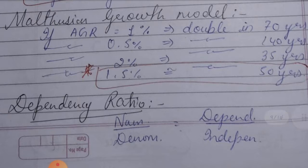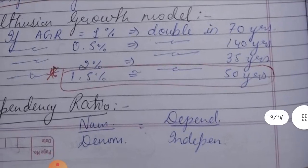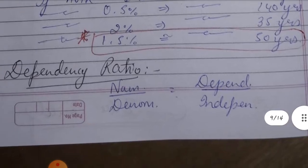According to the Malthusian Growth Model: if AGR is 1%, the population doubles in 70 years; if AGR is 0.5%, it doubles in 140 years; if AGR is 2%, it doubles in 35 years; and if AGR is 1.5%, the population doubles in 50 years.